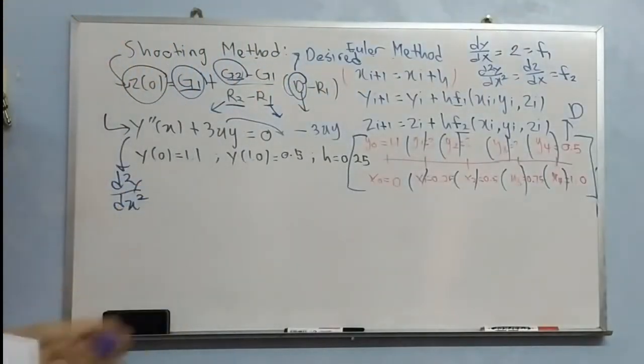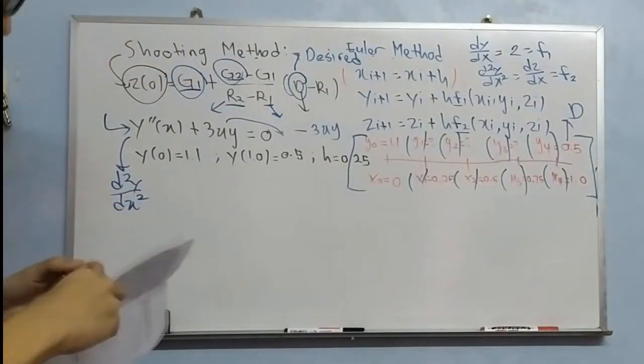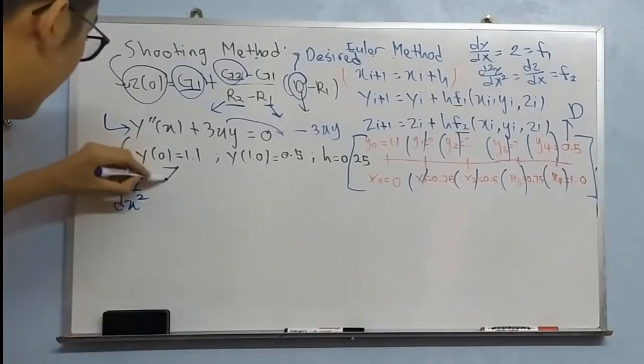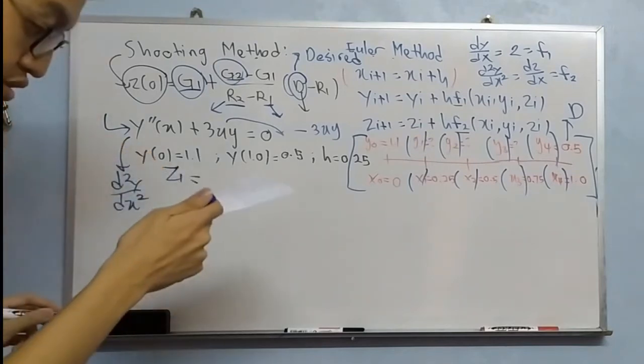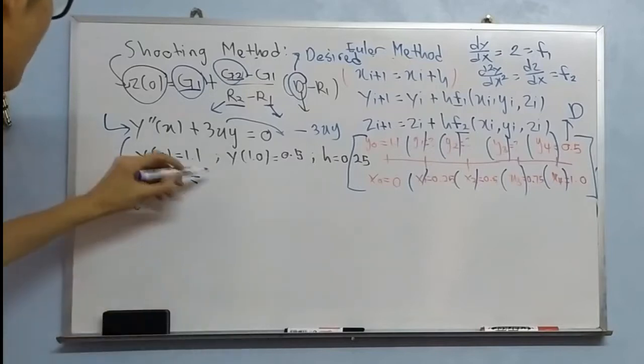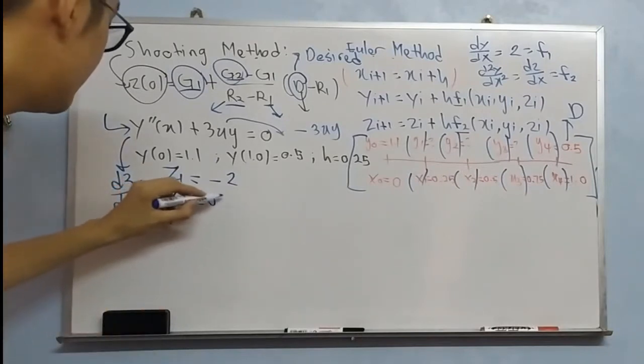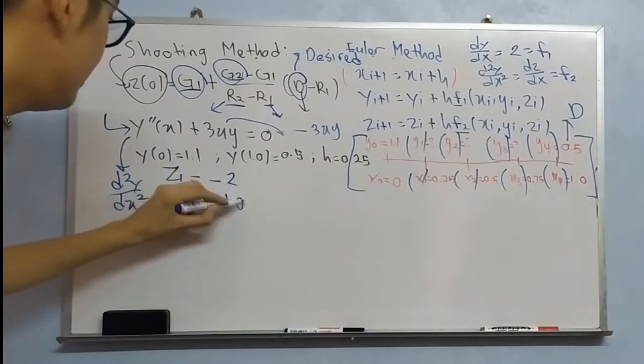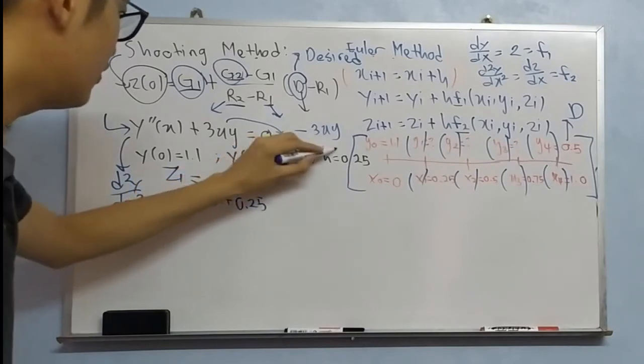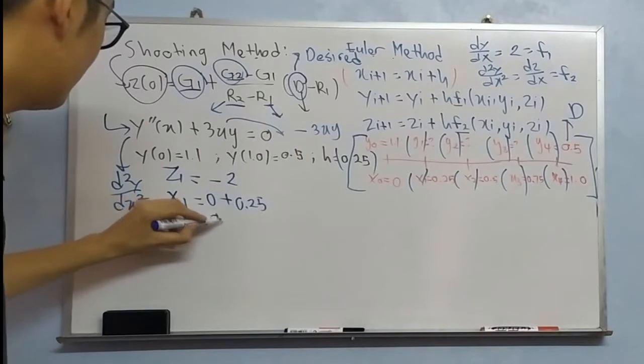So in shooting method, we require two guesses. So for my first guess, Z1, I will use negative 2 for my first guess. Okay, so now let's pause it for X1. So X1 is zero plus H, H is 0.25. We will get 0.25.